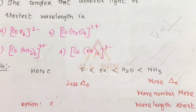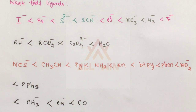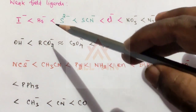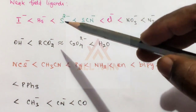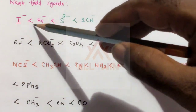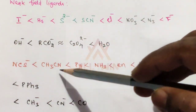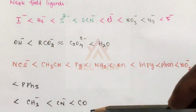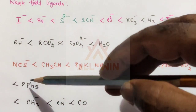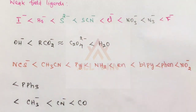Now we will talk about the Spectrochemical series and how to memorize it. We will discuss weak field and strong field ligands. Using the H-O-N-C memory aid: Halide donors first, then Oxygen donors, then Nitrogen donors, then Carbon donors. Phosphorus donors are also included.